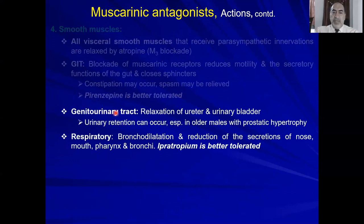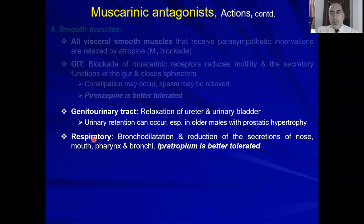On the genitourinary tract: muscarinic effects on the ureter and urinary bladder cause contraction of the walls of these organs. Atropine causes relaxation, leading to urinary retention — specifically in patients with prostatic hypertrophy, to be explained shortly. On the lung: muscarinic receptor stimulation causes bronchoconstriction and increased secretion. Atropine and similar drugs cause bronchodilation and reduction of secretions from the nose, mouth, pharynx, and larynx. Ipratropium is better tolerated — to be explained later.